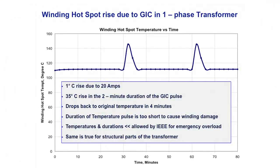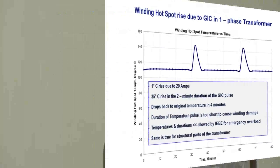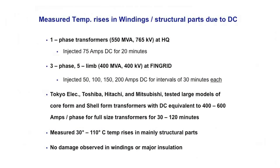The IEEE and IEC standards have limits for temperature allowed in windings and structural parts, which differ depending on whether it is long-term emergency loading — several hours — or short-term emergency loading of 15 to 30 minutes. In IEEE, for example, it allows 160 degrees for windings for up to half an hour. We are forming a task force in the IEEE transformer standards to develop what the limits should be for GIC, which has two- to three-minute durations — those temperatures will be much higher.